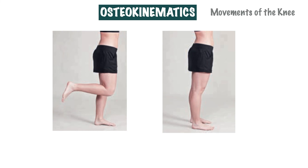Next we have the osteokinematic movements of the knee. First we have knee flexion — from a standing position, notice the bending motion occurring at the knee. Directly next to this is an example of knee extension. We can simply say that the knee has moved from a flexed position to a fully lengthened position, hence the name knee extension.